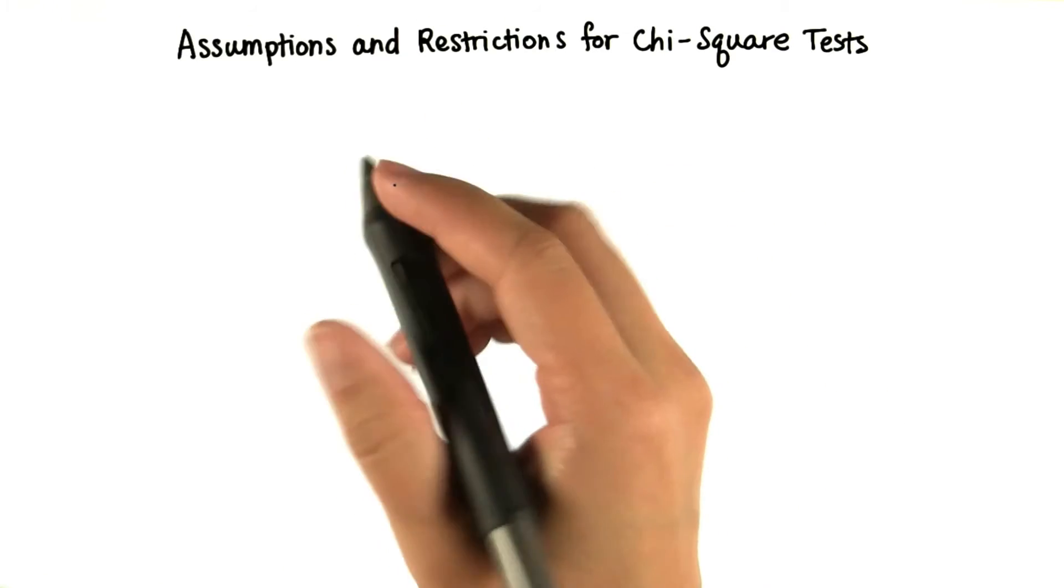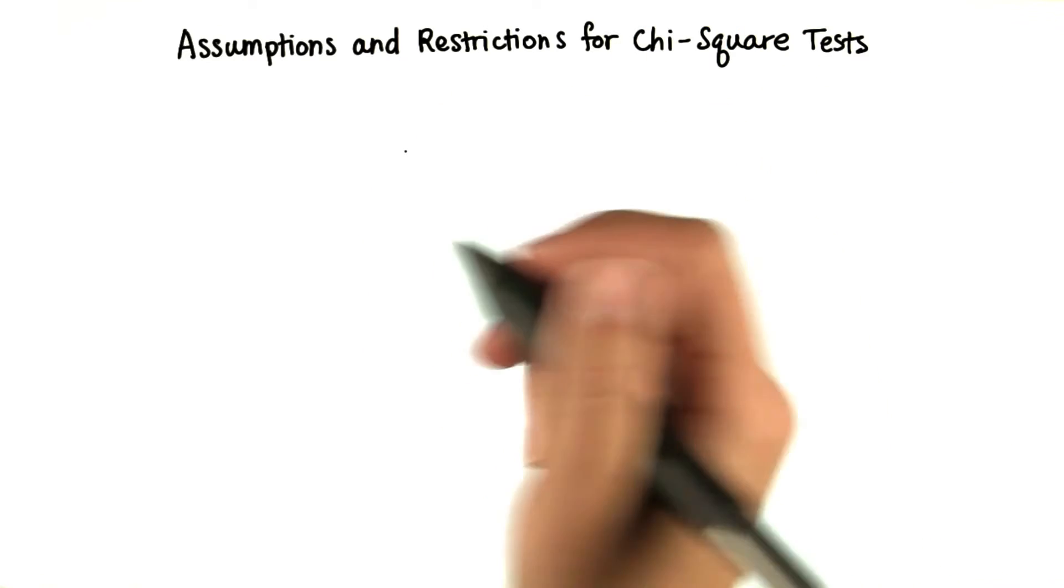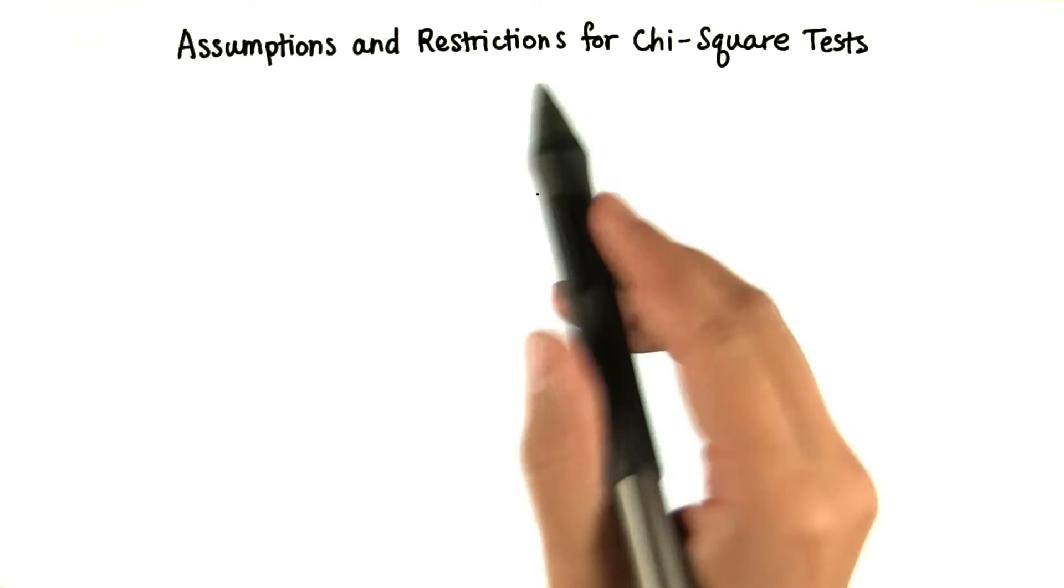Before we wrap up, let's go over some assumptions and restrictions for chi-square tests. Just like with all tests, we have to make sure that we're adhering to certain guidelines in order to do this test.